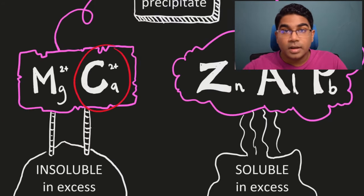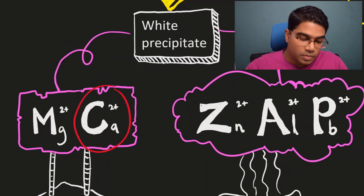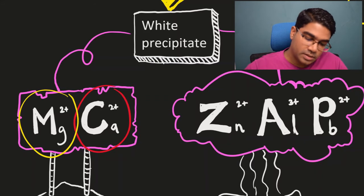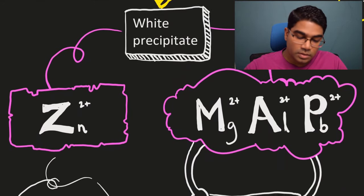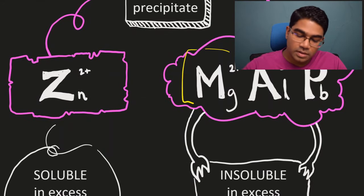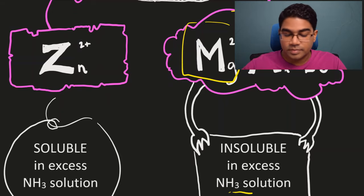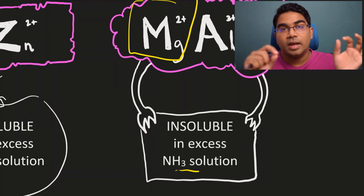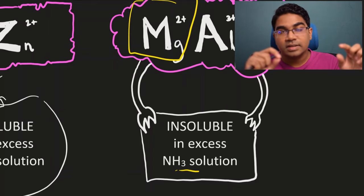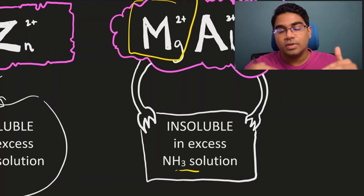Calcium ion joins ammonium ion in that it does not form a white precipitate with ammonia solution. Now what about magnesium? When we add a few drops of sodium hydroxide solution, we get a white precipitate that is insoluble in excess sodium hydroxide solution. And when we add a few drops of ammonia solution, we still get a white precipitate that is insoluble in excess ammonia solution. So in the case where you get a white precipitate insoluble in excess for both reagents, then we know that it is magnesium.